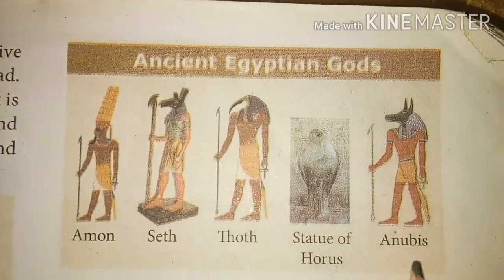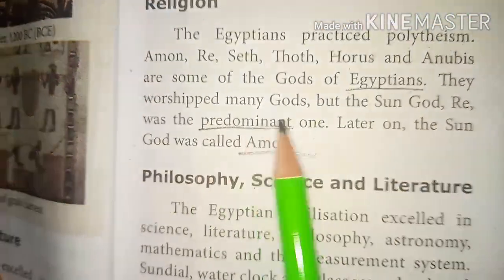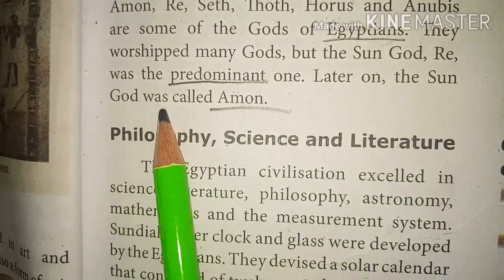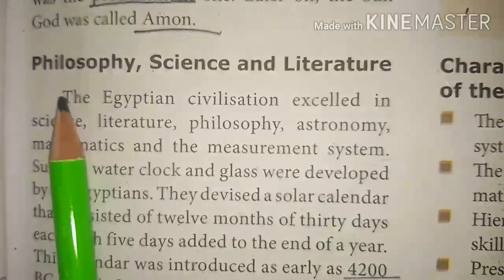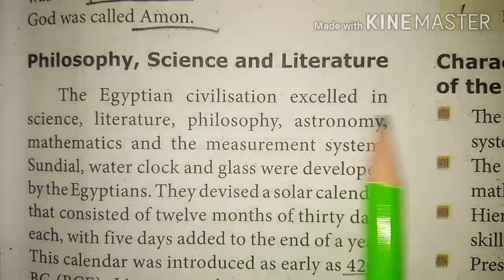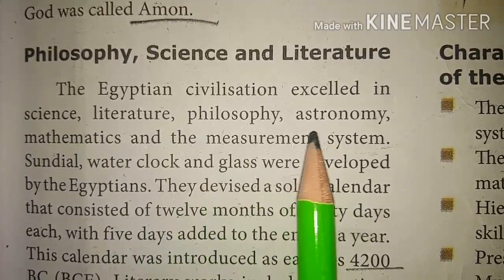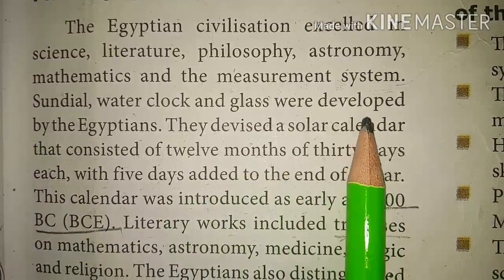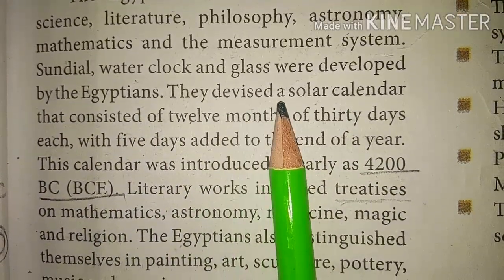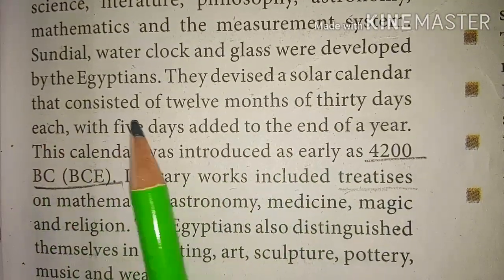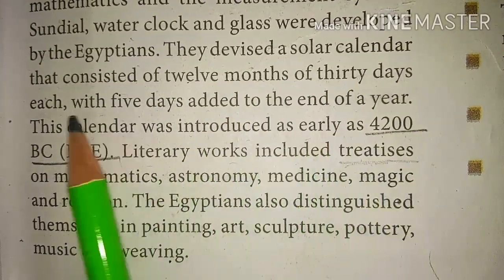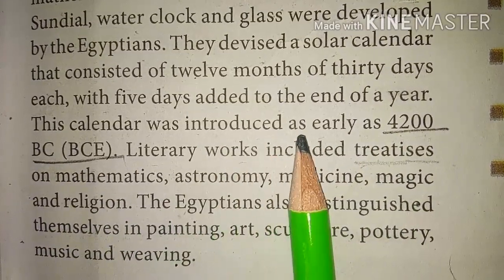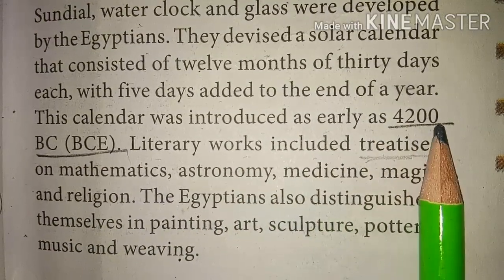Statues of Horus and Anubis. They worshipped many gods, but the sun god Ra was the predominant one. Later, the sun god was called Amun. Philosophy, Science and Literature: The Egyptian civilization excelled in science, literature, philosophy, astronomy, mathematics and measurement systems. The sundial, water clock and glass were developed by the Egyptians. They devised a solar calendar consisting of 12 months of 30 days each, with 5 days added at the end of the year. This calendar was introduced as early as 4200 BC.